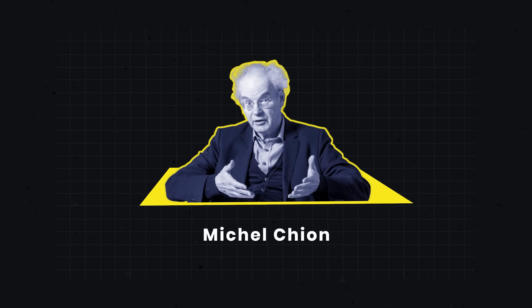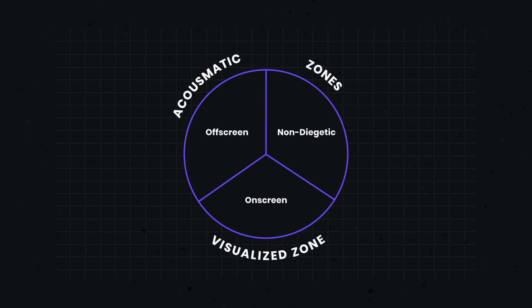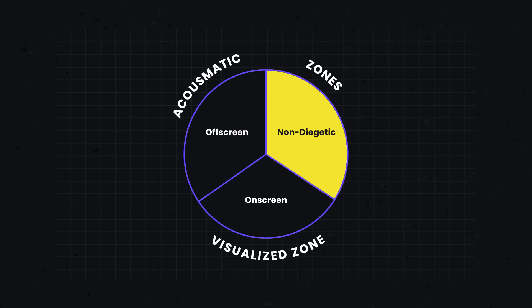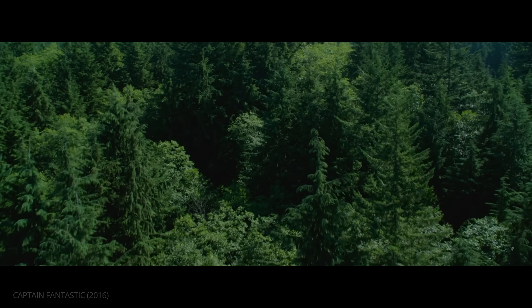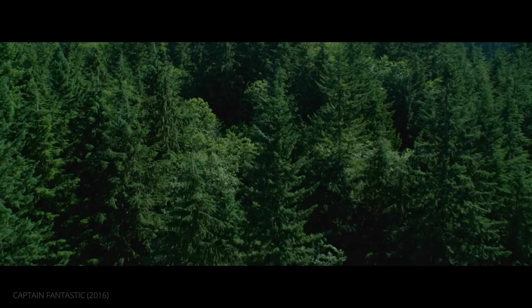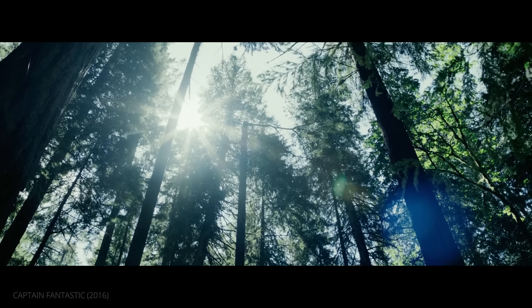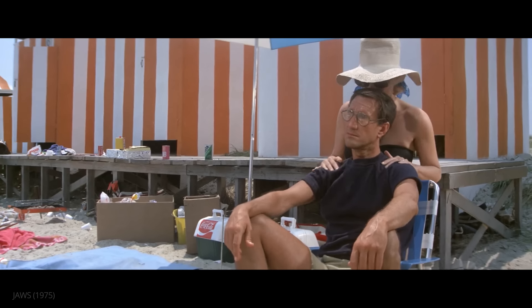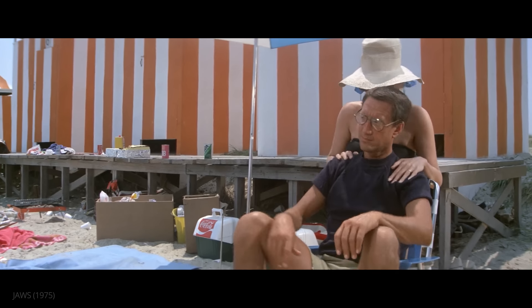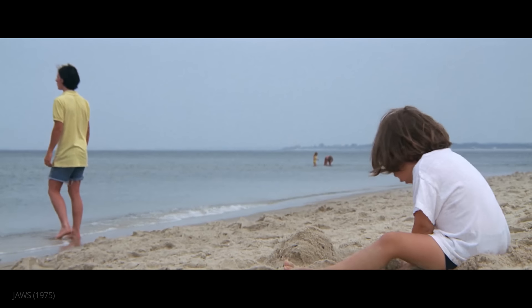Theorist Michel Chion developed a visualization to mark the differences. He divides all sound into three zones. Two of these are acousmatic zones, covering sounds we hear but can't see the source. These are either off-screen sounds that belong to the diegesis, like unseen birds chirping in a forest scene, or they are non-diegetic sounds that the characters can't hear because they exist outside the world of the film, like a musical score.